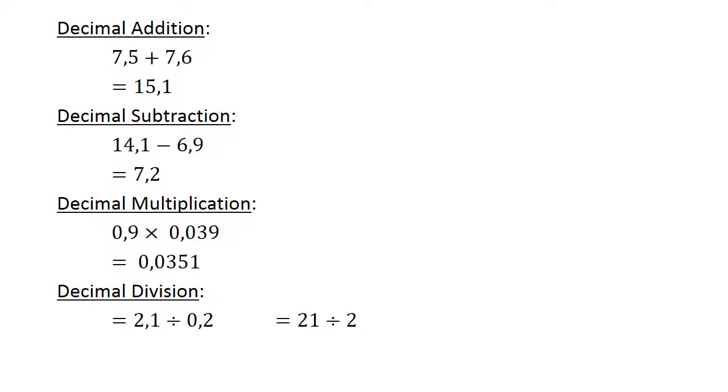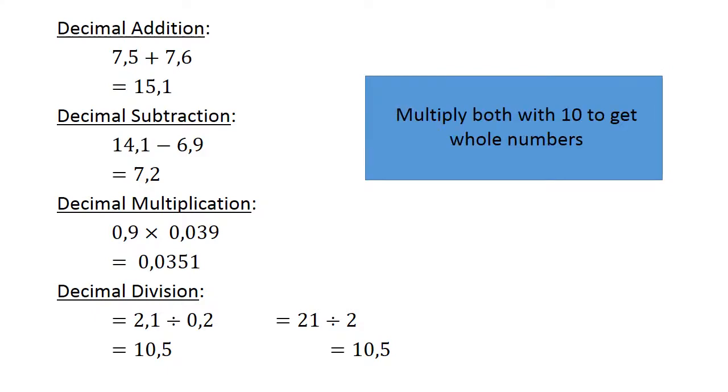Decimal division. 2.1 divided by 0.2. Remember, multiply both with 10 to get whole numbers. 21 divided by 2 equals 10.5.